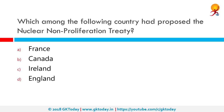Which among the following countries proposed the Nuclear Non-Proliferation Treaty? The correct answer is Ireland. The Treaty on Non-Proliferation of Nuclear Weapons or NPT is an international treaty whose objective is to prevent the spread of nuclear weapons and weapons technology, promote cooperation in the peaceful use of nuclear energy, and further nuclear disarmament. Between 1965 and 1968, the treaty was negotiated by the 18-nation committee on disarmament, a United Nations-sponsored organization based in Geneva, Switzerland.